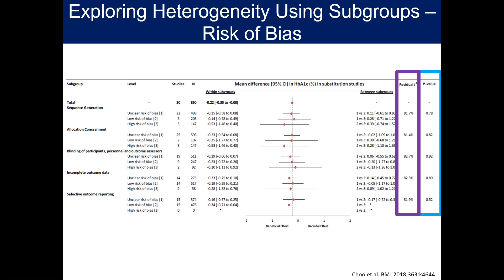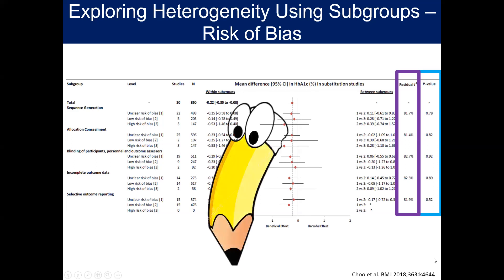How would you rate your SRMA based on the factor of individual study limitations or risk of bias? Note that if no risk of bias assessment was performed, you cannot assess this factor. Take a minute to review this section and the information you previously recorded, and record your notes under section 2 on page 4 of your worksheet.